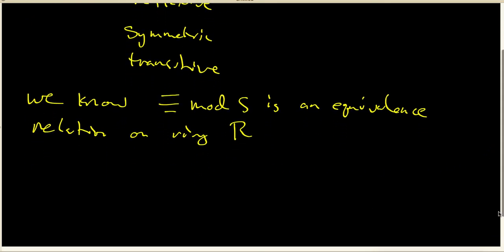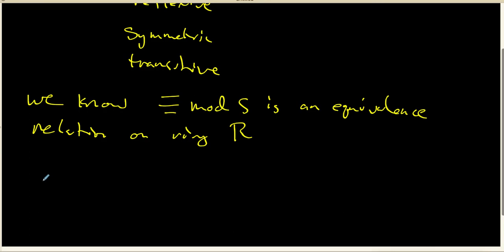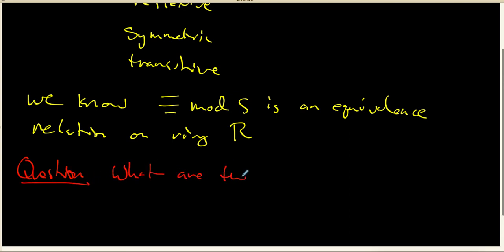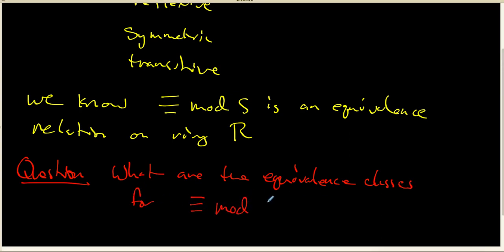To tie everything up: since congruency mod S is reflexive, symmetric, and transitive, we know that congruency mod S is an equivalence relation on the ring R. I want to end this video with an obvious question: what are the equivalence classes for congruency mod S? We will investigate that in the next video.